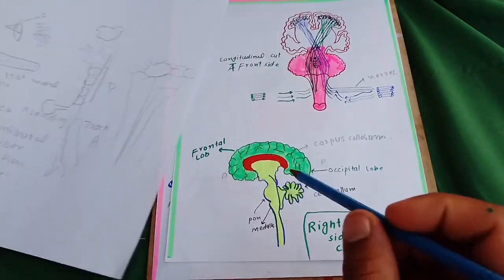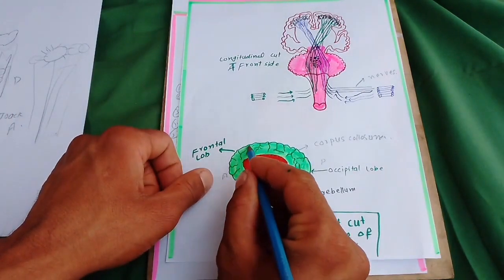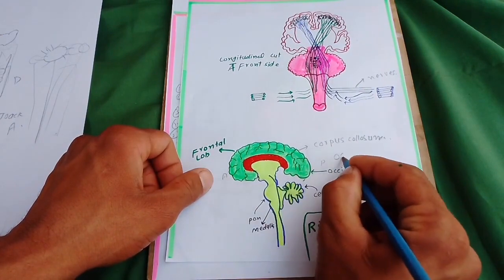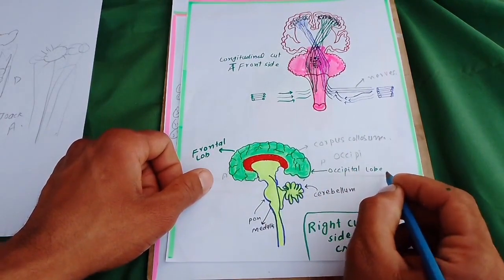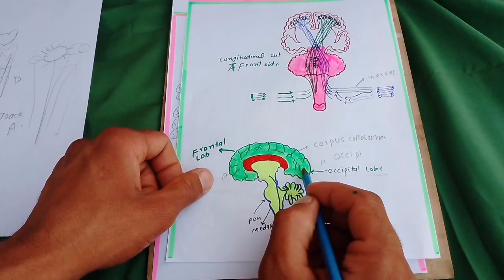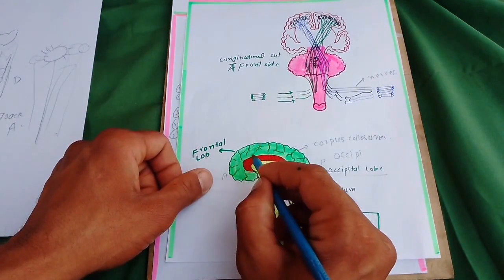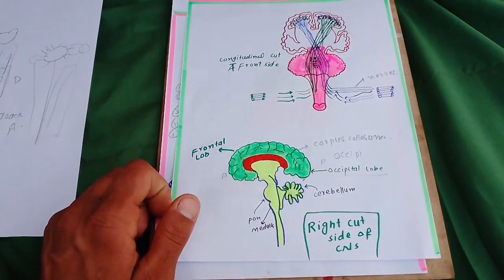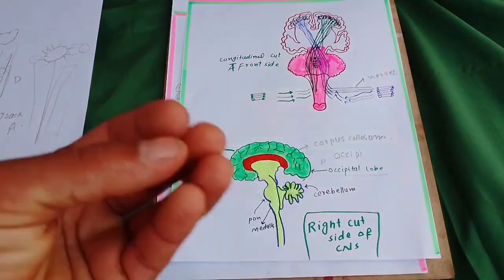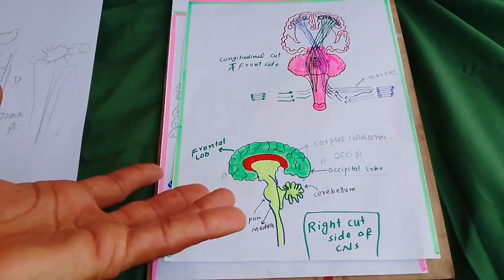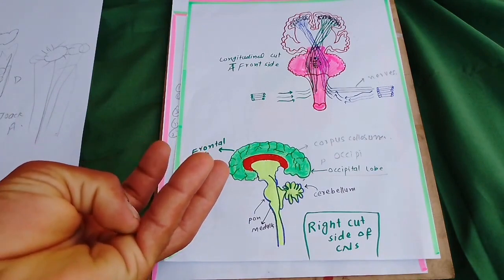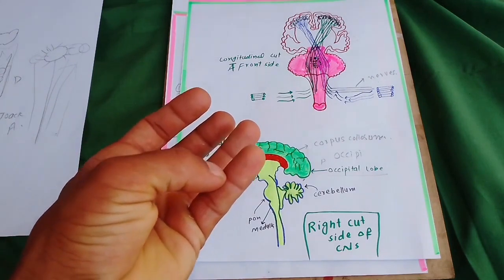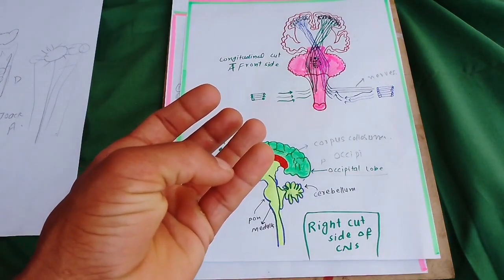Another type of white matter is the association fiber. The frontal lobe and the occipital lobe of the cerebrum are connected together by fibers called association fibers. So white matter is mainly divided into three groups: commissural fibers — specifically the corpus callosum — tracts divided into ascending and descending, and association fibers.